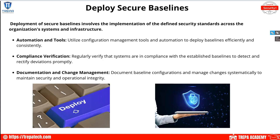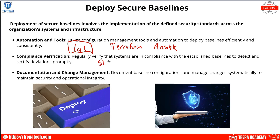In a Cisco environment, tools like DNA Center (now Cisco Catalyst Center), wireless LAN controllers, and call managers can be used. In a vendor-neutral environment, IaC (Infrastructure as Code) is a way to deploy secure baselines. For server and cloud infrastructure, tools like Terraform or Ansible give a single definition of baselines for servers, services, containerization, and Kubernetes deployments. Compliance verification involves regularly verifying systems are aligned with established baselines.